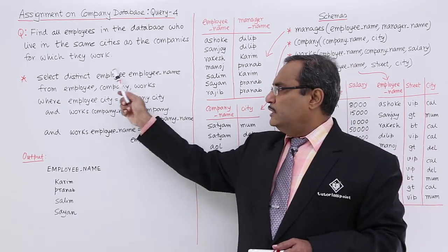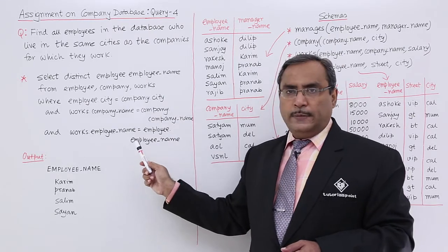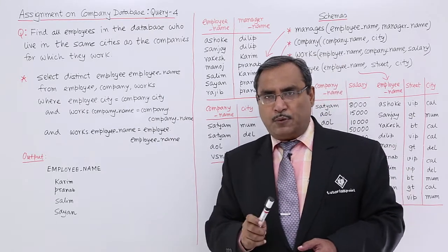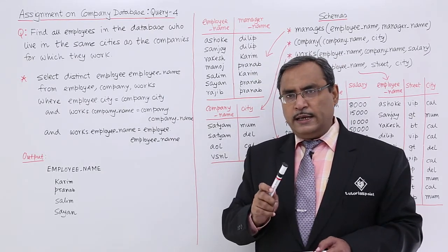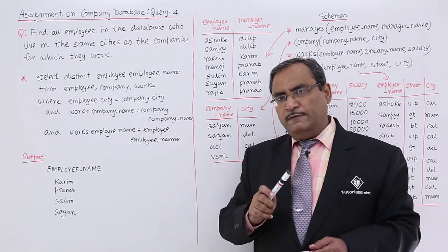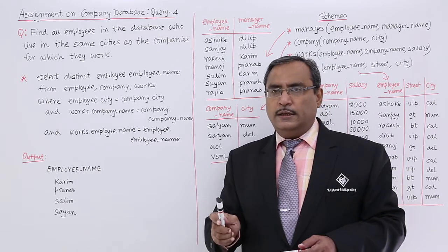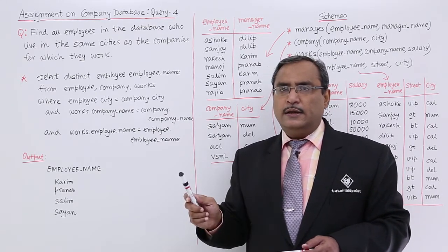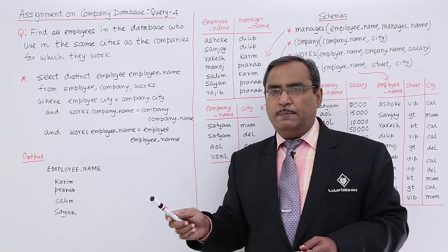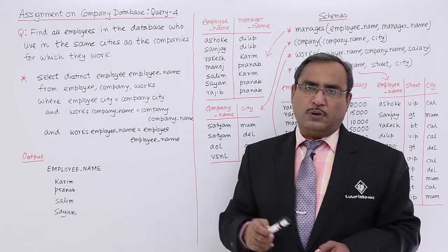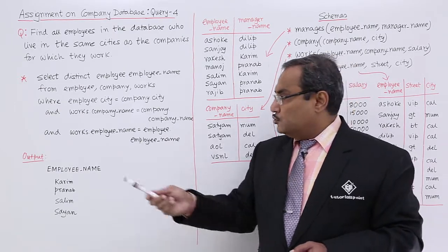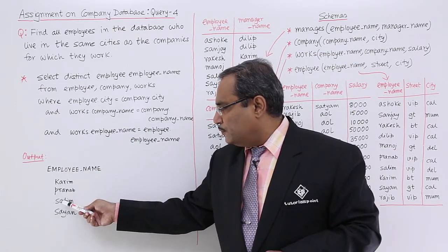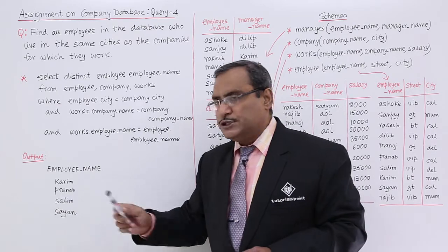If you execute this query, we get only those employee names who are residing in the very city where a company has an office and in that very company the employee is working. As output, I shall be getting Karim, Prunov, Selim, and Shion.